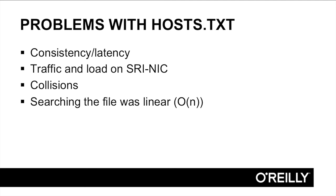The amount of bandwidth consumed by folks sending updates to the NIC and downloading the host table was considerable. Remember, in the early days, the pipes that constituted the backbone of the ARPANET ran at 56 kilobits per second. Though IP networks could be assigned in a way that allowed network administrators to dole out individual IP addresses without consulting a central authority, host names couldn't be assigned the same way. You had to search the host table for name collisions before naming a host, and all the good names — like Frodo, Bilbo, and Gandalf — were quickly used up.